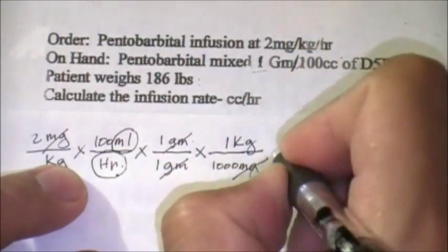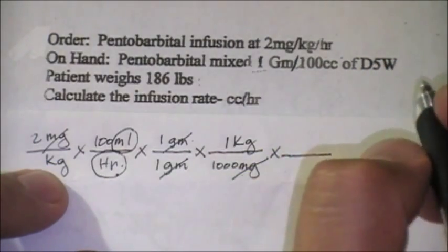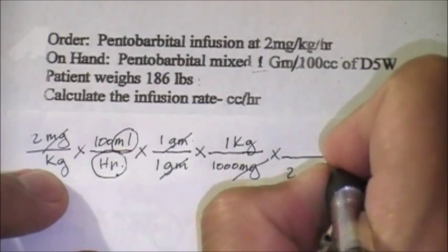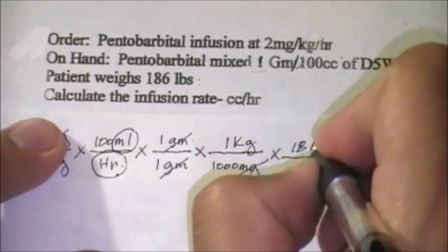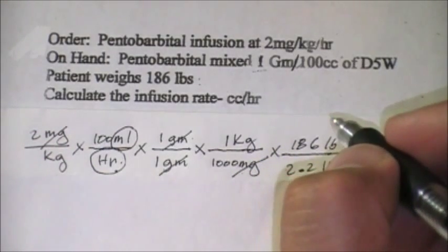We want to make another fraction that is equivalent to 2.2 pounds. The patient's weight is 186 pounds.